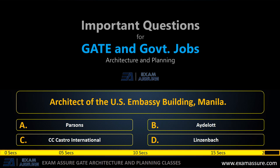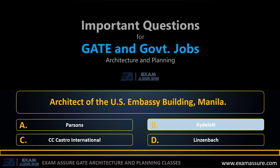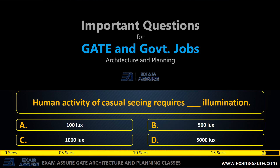Next question: The architect of the U.S. Embassy building in Manila is — option A: Parsons, option B: Idelot, option C: Castro International, option D: Lineage Badge. The correct answer is Idelot.